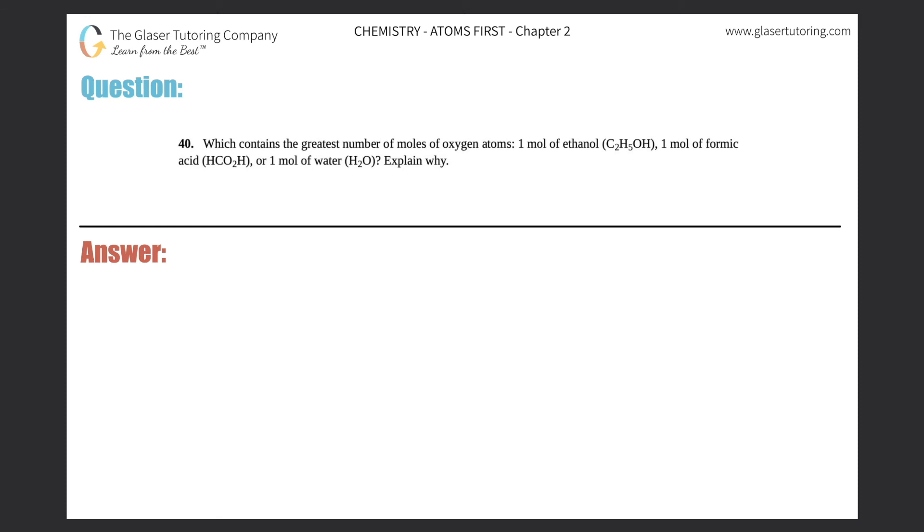Number 40: Which contains the greatest number of moles of oxygen atoms - one mole of ethanol (C2H5OH), one mole of formic acid (HCO2H), or one mole of water (H2O)? Explain. We did a very similar problem in number 39, so if you want to be more familiar with it you could always go back to number 39, but we're going to just move right forward.